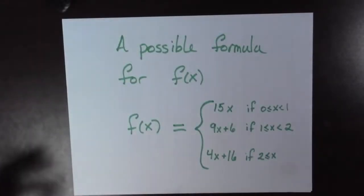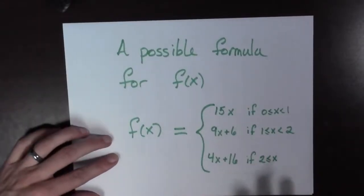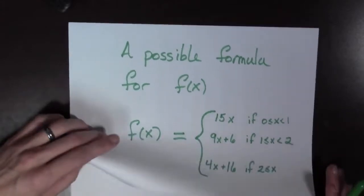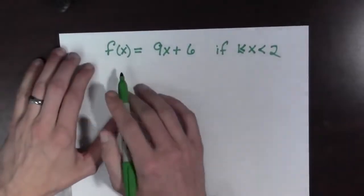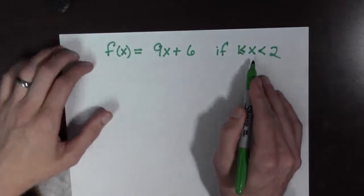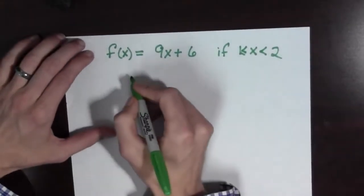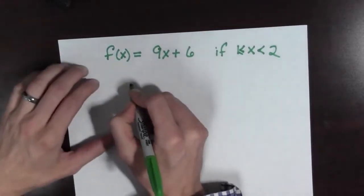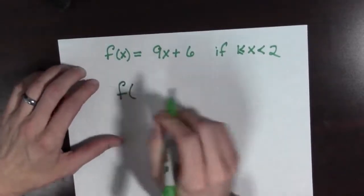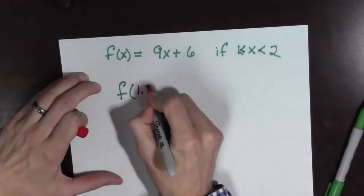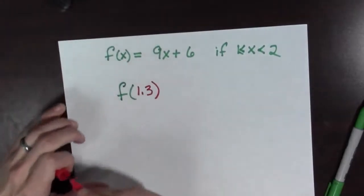Now remember, Roxy is 1.3 human years old. So that's this formula here. So let's go to the next page. And we see that f of x is equal to 9x plus 6 if 1 is less than or equal to x less than 2. And so we're going to have f of how old is she? She's 1.3 human years old.